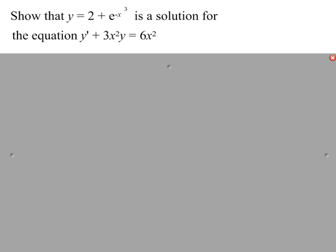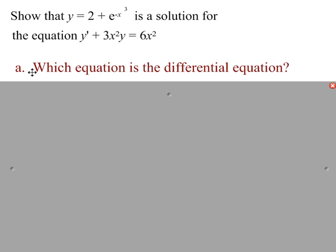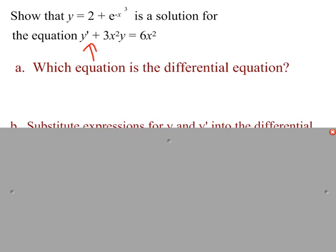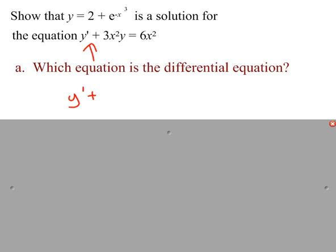So one thing we can do — we're going to start with just giving you some potential solutions, and you have to check or show and prove that they are indeed solutions. Later on we'll actually learn how to find solutions for differential equations, but right now we're just going to give you the solution and you say yes or no. We start by figuring out which equation is the differential equation — the one with the derivative — which is y prime plus 3x² y equals 6x².